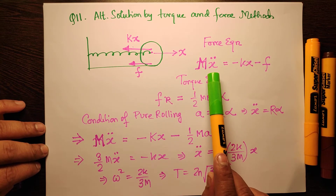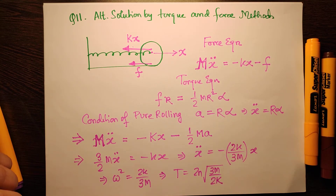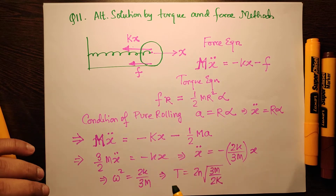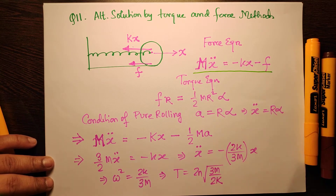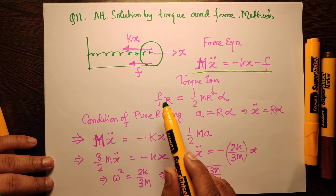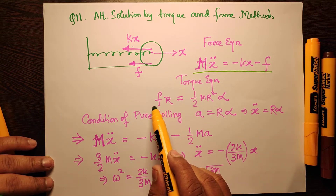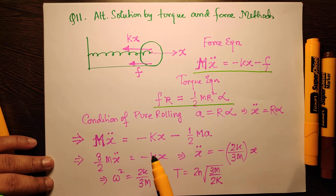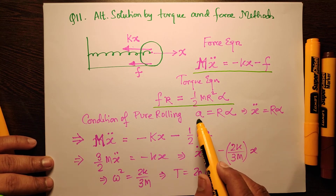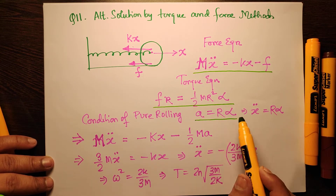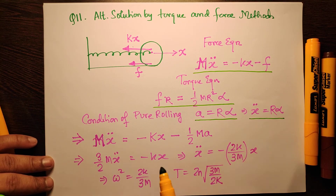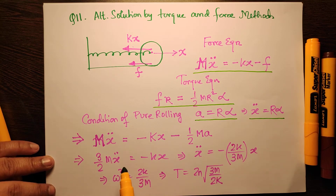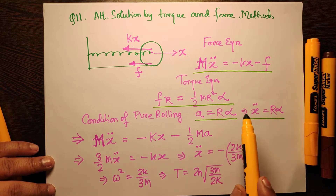The force equation is: m·x'' = −kx − f. The torque equation from the center of mass: f·r = (1/2)·m·r²·α. The condition of pure rolling: a = r·α, or equivalently x'' = r·α.